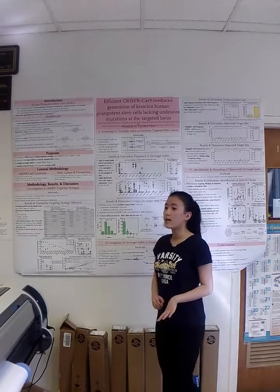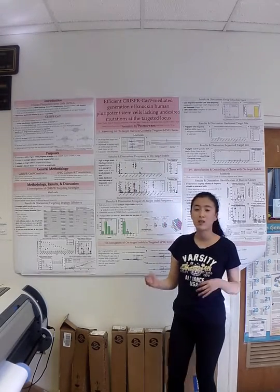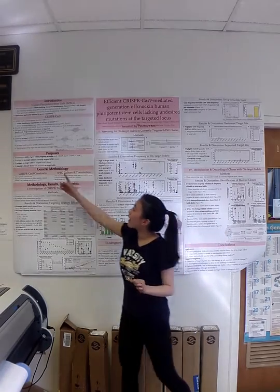Off-target indels may be mitigated via bioinformatic analysis of the targeted site, as well as the use of the Cas9 nickase. However, on-target indels have not been previously studied in detail regarding CRISPR-Cas9, although previous studies do suggest that destroying or separating the target site may reduce on-target indel frequency.